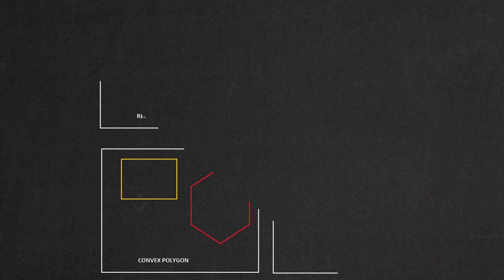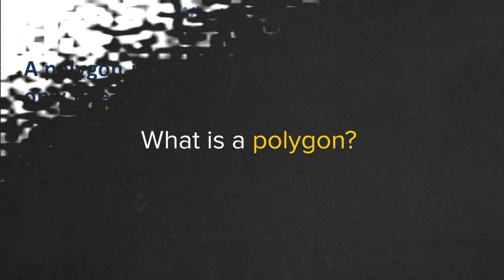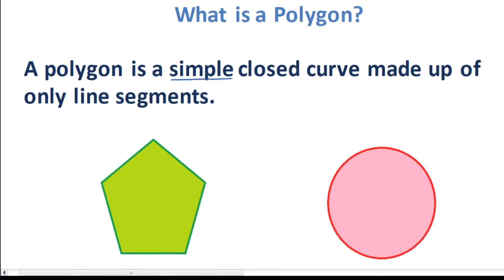So, the first question is: What is a polygon? A polygon is a simple closed curve made up of only line segments. For example, this is a polygon. But this is not a polygon.